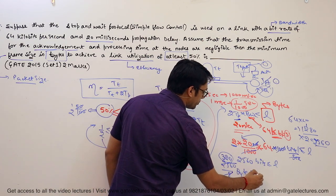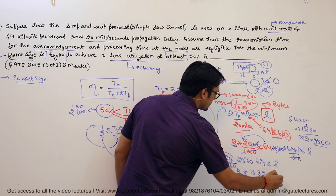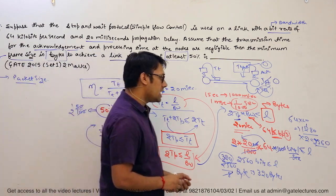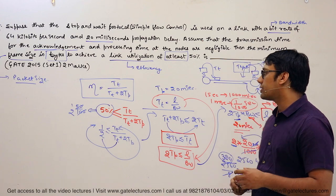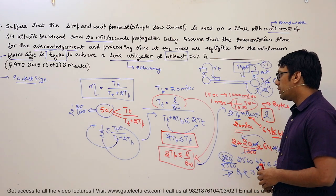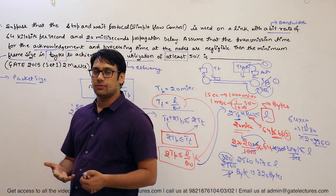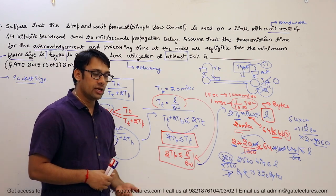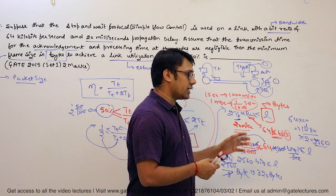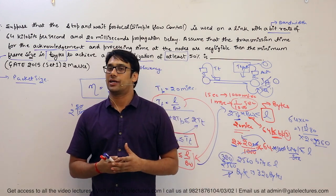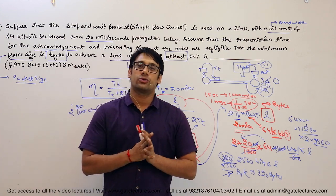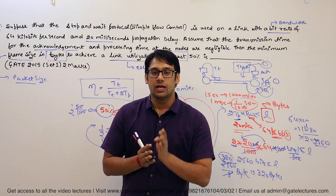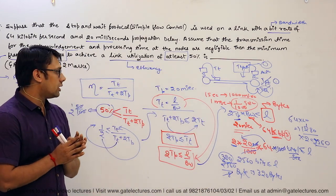The answer to this question is 320 bytes. I took time to explain the entire procedure, but in an examination hall this should take barely 30 seconds if you know the method. The best way to solve questions is to practice as much as possible. We will provide many practice problems and cover all previous year GATE and UGC NET problems.